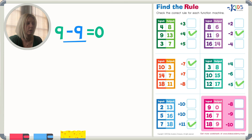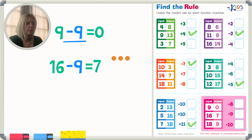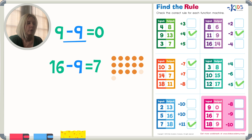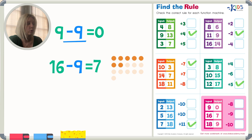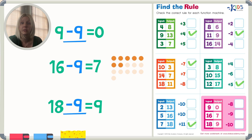Let's see if it works on another one. 16 minus 9 should equal 7. Drawing it out — 1 through 16, then take away 9: 1, 2, 3, 4, 5, 6, 7, 8, 9 — we should be left with 7. Five plus 2 more is 7. Yes, we got it right! And for 18 minus 9 equals 9 — I know that's right because I know my doubles: 9 plus 9 equals 18. So minus 9 is the correct rule.